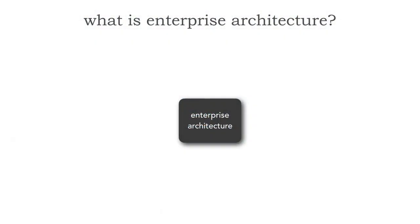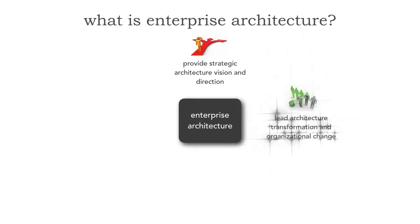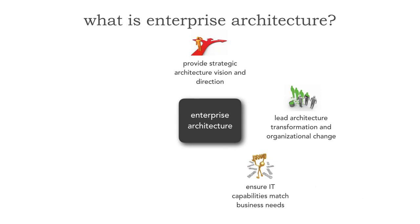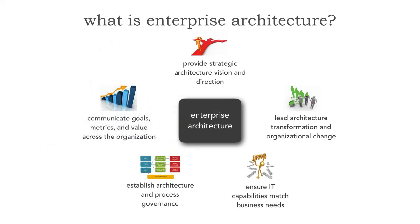But there are five other sub-goals. The first is to provide that strategic architectural vision and direction — this is what enterprise architects do. They also lead the architectural transformation and organizational change that comes about from business initiatives. The third is to ensure that capabilities match between what IT capabilities we're providing and what business needs actually are. The fourth is to establish architecture and process governance practices. And finally, to communicate those goals, metrics, and value of what we're doing across the organization.